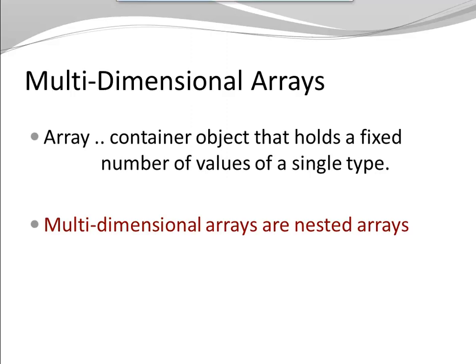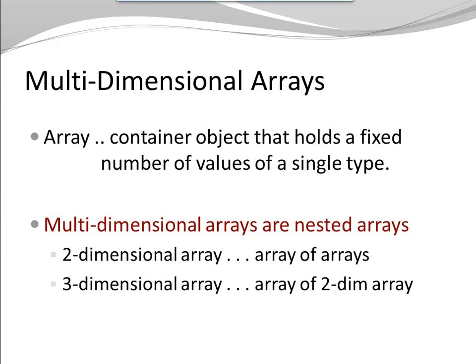An array is a container object that holds a fixed number of values of a single type. A multidimensional array is a nested array. A two-dimensional array, for example, is an array of arrays. A three-dimensional array is an array of two-dimensional arrays, et cetera.